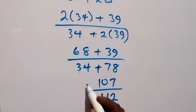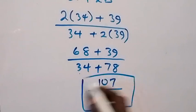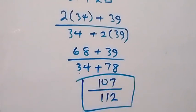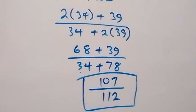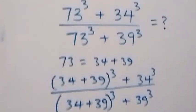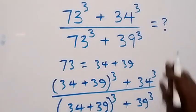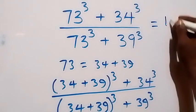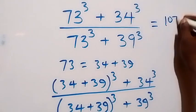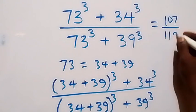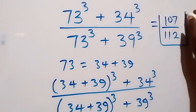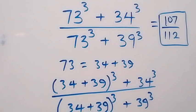Now recalling that a equals 34 and b equals 39, this becomes (2 times 34 plus 39) divided by (34 plus 2 times 39), that is 68 plus 39 over 34 plus 78, which gives 107 divided by 112. So the answer to this problem is simply 107 over 112. Thank you for watching, don't forget to subscribe to my channel and turn the notification bell on. See you next class, bye for now.